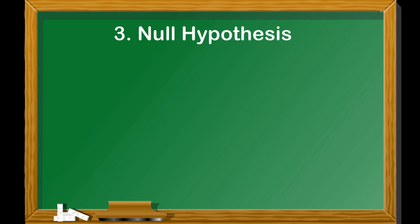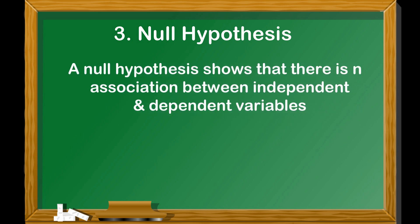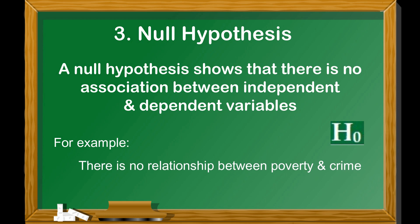Number 3. Null hypothesis. A null hypothesis shows that there is no association between independent and dependent variable. It is shown by H0. For example, there is no relationship between poverty and crime. This statement is a null hypothesis.